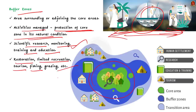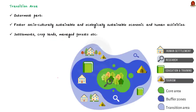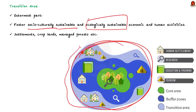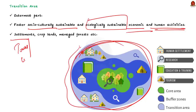The transition area is the outermost part of a biosphere reserve. It is where communities foster socio-culturally and socially sustainable economic and human activities. This is where people are doing their own activities. It includes settlements like towns and cities, croplands, managed forests, etc.